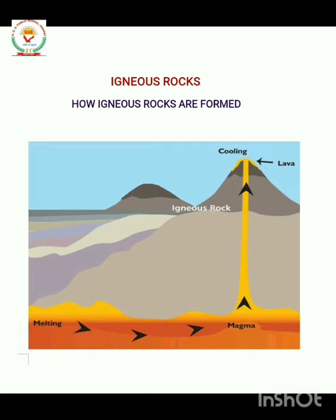This lava then cools and igneous rocks are formed. That is, when a volcano bursts out, the magma present inside the Earth comes to the outer surface of the Earth, which is called lava. Then this lava cools down and gets converted into igneous rocks.